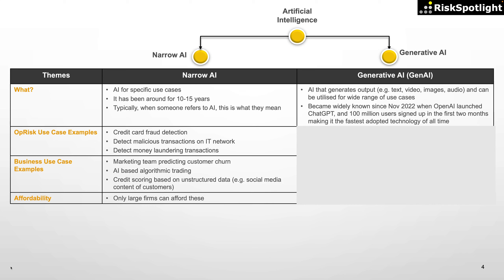Now let me cover the key aspects of generative AI technologies. These technologies are based on AI models that can generate output in various formats, and hence the label generative. They can generate outputs in various formats such as text, videos, images, and audio.